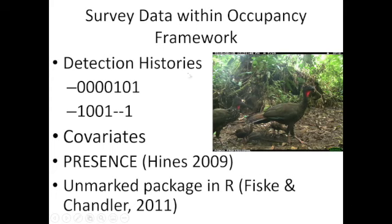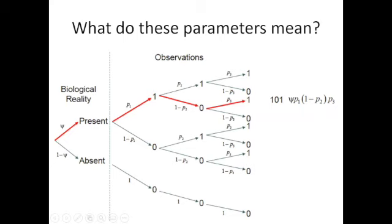We then collect covariates to predict the distribution of species like guans. Today we'll use the software PRESENCE — searchable via Google for the USGS download site — though you could also use the unmarked package in R. The biological reality is that psi represents the species being present (or 1 − ψ being absent). The probability statement for a detection history like '1-0-1' is: ψ × p × (1 − p) × p, reflecting detection in survey one, non-detection in survey two, and detection in survey three.